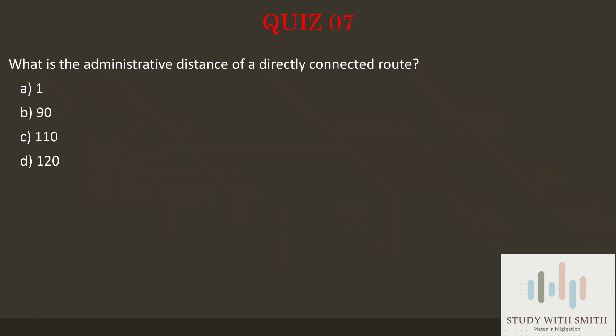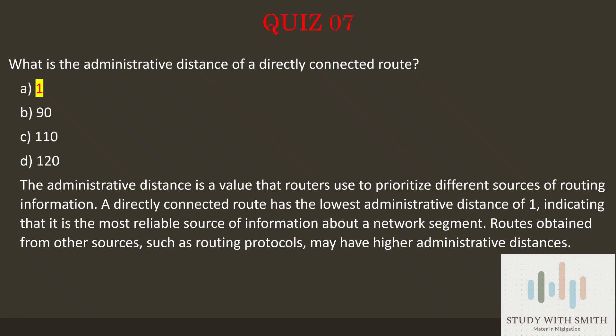Question 7: What is the administrative distance of a directly connected route? The answer is A: 1. Administrative distance is a value that routers use to prioritize different sources of routing information. A directly connected route has the lowest administrative distance of 1, indicating that it is the most reliable source of information about a network segment. Routes obtained from other sources, such as routing protocols, may have higher administrative distances.